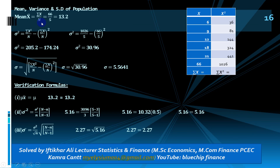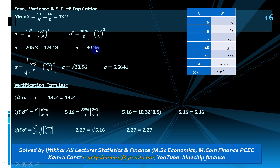For part 2, take the population {6, 9, 12, 18, 21}. Sum of x = 66; sum of x² = 1026. Population mean = 66/5 = 13.2. Population variance = 30.96, and population standard deviation = √30.96 = 5.5641.